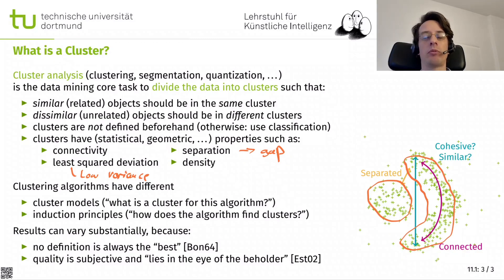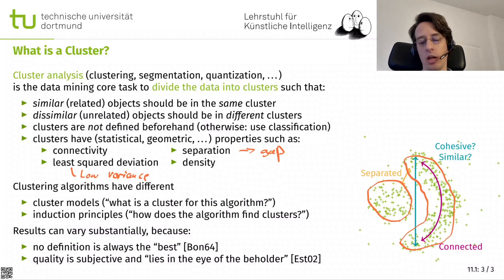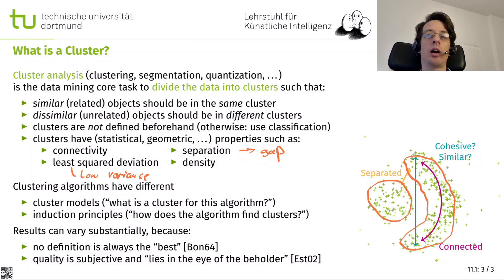This was recognized even in early literature from the 1960s: no definition is always the best. Different users want different cluster definitions, and they will consider different definitions better than others. Much later it was similarly noted that the quality of a cluster is subjective and lies in the eye of the beholder — what one person considers a good cluster may not be what another considers good.